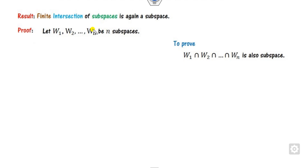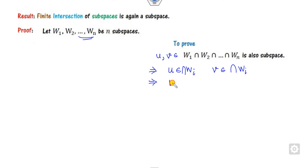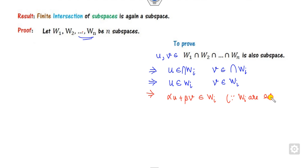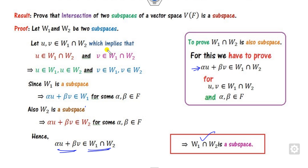Instead of two subspaces, you can take N subspaces, and the intersection still belongs to a subspace. How do you prove that? Again, take two elements U and V belonging to the intersection of all Wi's. This means U belongs to each Wi and V belongs to each Wi. Since each Wi is a subspace, alpha·U plus beta·V also belongs to each Wi, because alpha and beta are in the field F. Therefore, it belongs to their intersection. Hence, the intersection of N subspaces is also a subspace. Remember that the intersection is the largest subspace contained in both W1 and W2.